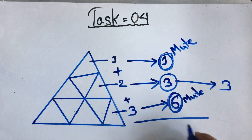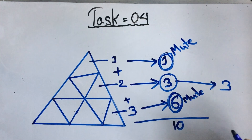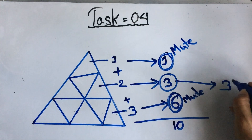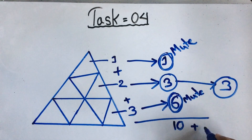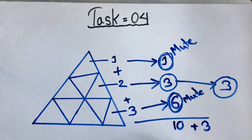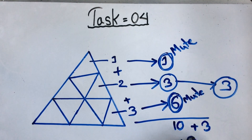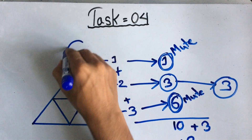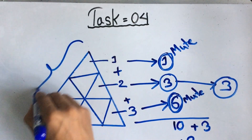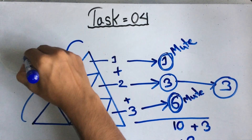Now it's time for summation. Six plus three plus one equals ten. And there are only three numbers that were not omitted, so the total is ten plus three equals thirteen. The answer to this question is thirteen.